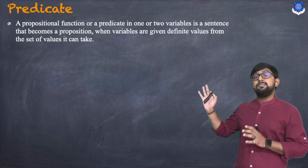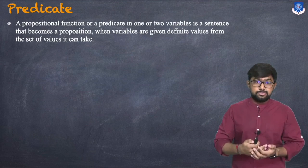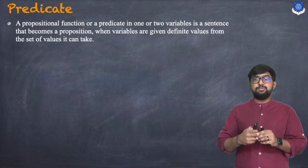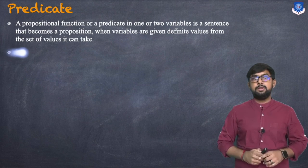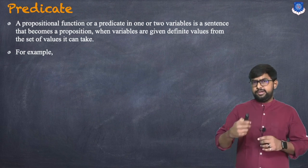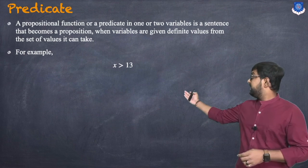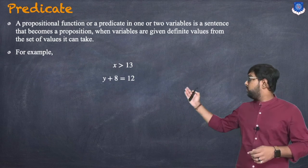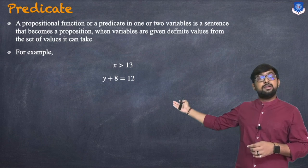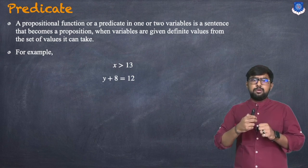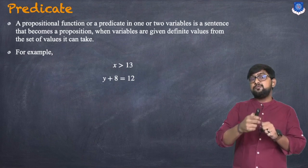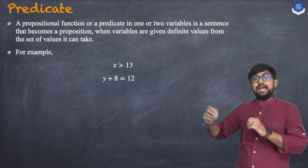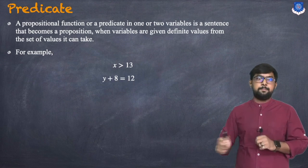variables are given definite values from the set of values it can take. For example, 'x is greater than 13', or 'y plus 8 equals 12'. Whenever we put y equals 4, then it becomes 4 plus 8 equals 12, and it becomes a predicate.